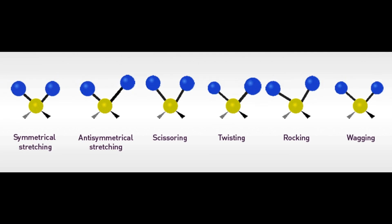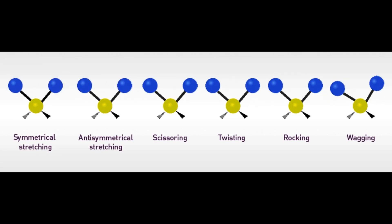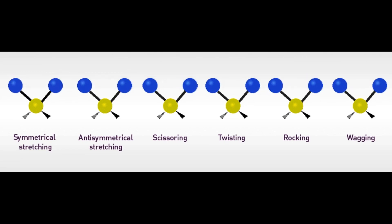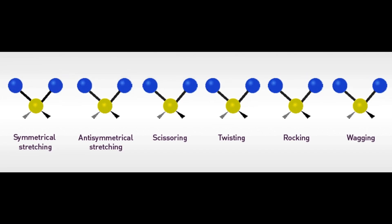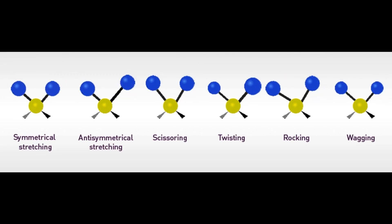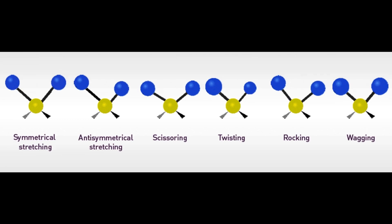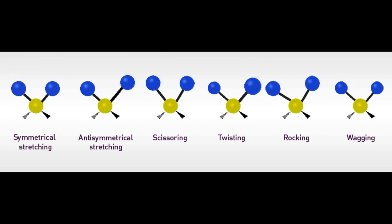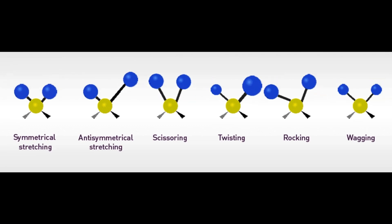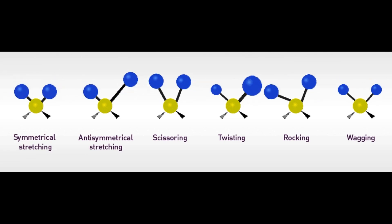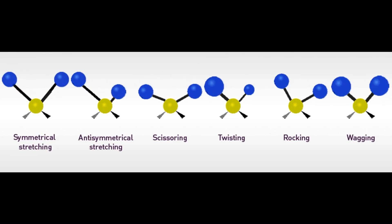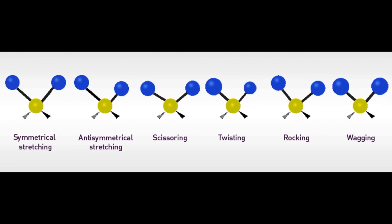Bending vibrations are used to confirm functional groups and are in the fingerprint region, which is specific to each molecule. For example, for a benzene derivative, bending vibrations confirm whether it is ortho, meta, or para substituted. However, since these are minute and confusing, our main focus for carbonyl backbonding is on the stretching vibrations — symmetrical and anti-symmetrical.